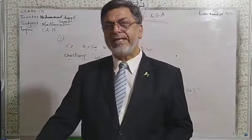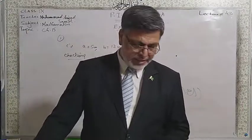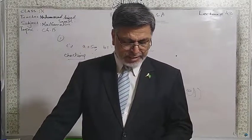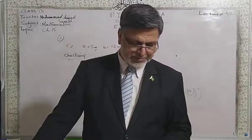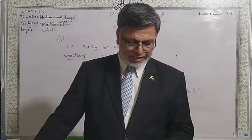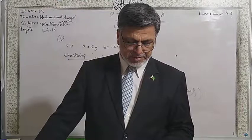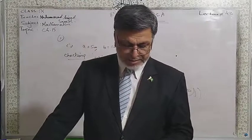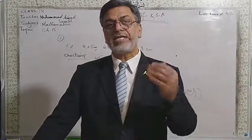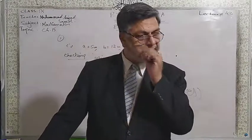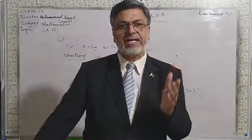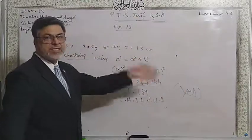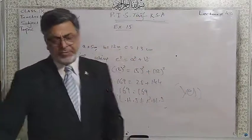Similarly, in exactly the same way, you can check part number 4 by applying c² = a² + b². If the left hand side becomes equal to the right hand side, then it will be yes — a right angle triangle — otherwise no.